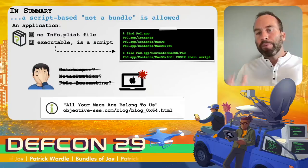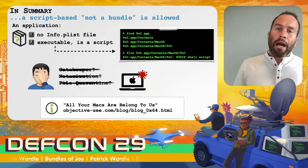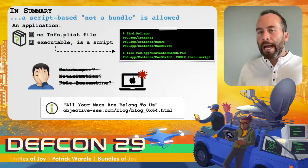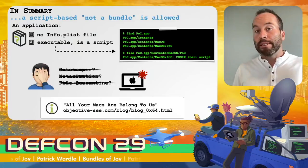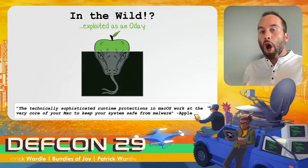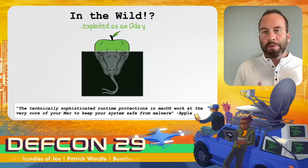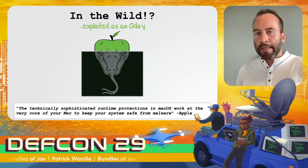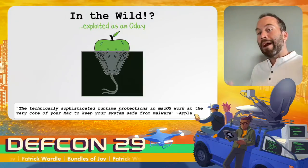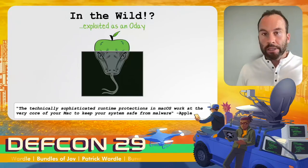That's a brief overview of reverse engineering syspolicyd. If you're interested in more details of that reverse engineering effort, check out the detailed blog post linked on the slide. So now we know the cause of the vulnerability: a script-based application with no info.plist file will get misclassified as not being a bundle and will be allowed to run, bypassing all of Apple's anti-infection mechanisms.